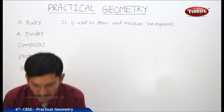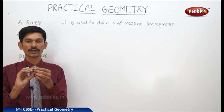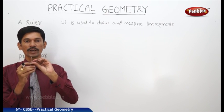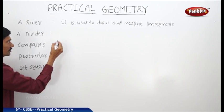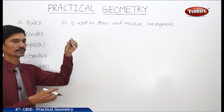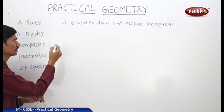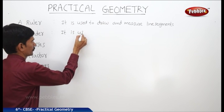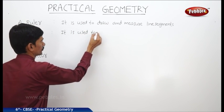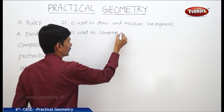Next, a divider. If you see the geometry instrument box, we have another device, the divider. This divider has two points at the two ends. It is used to compare line segments.